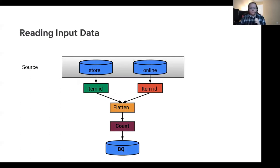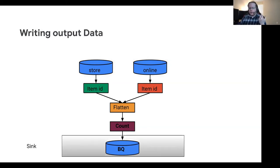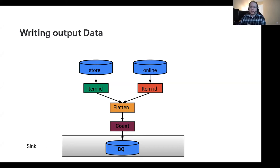Sources are just the term for any time Beam is pulling data in from some outside Beam source. And sinks are the opposite — whenever Beam is outputting data to some non-Beam destination. We can think of these in very strong terms as side effects of the Beam pipeline, and that's what we think of when we talk about IOs.